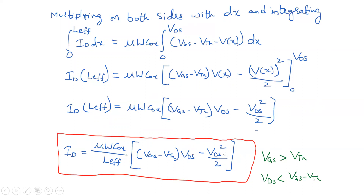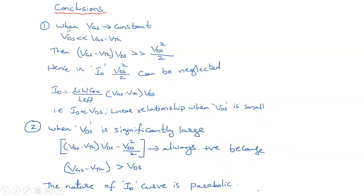This drain current expression is applicable under two conditions: first, VGS must be greater than Vth so that the channel is created and current can flow; and second, V_DS must be less than VGS minus Vth. We will examine what happens when V_DS exceeds VGS minus Vth. Now from this expression we can draw conclusions, starting with the case where VGS is held constant.